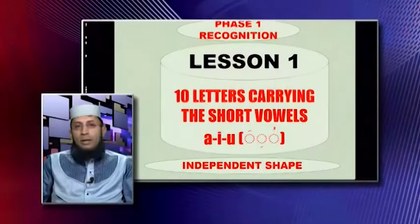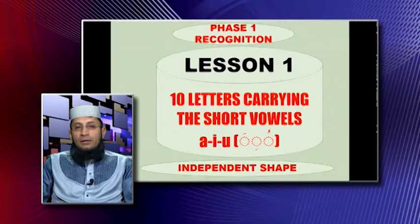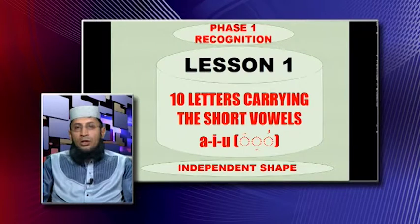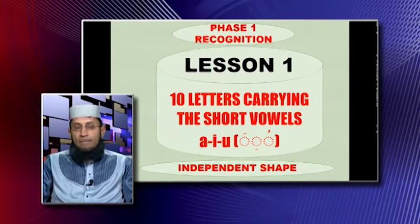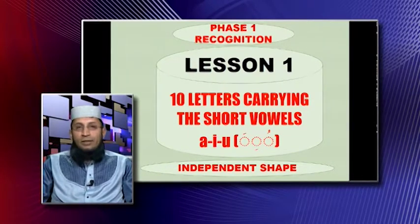In Lesson 1, we focus on the 10 letters of the Arabic alphabet that carry the short vowels. This is Phase 1, which is the recognition or identification phase. We focus on letters in the independent shape — they are not joined or attached to a letter before it or after it.